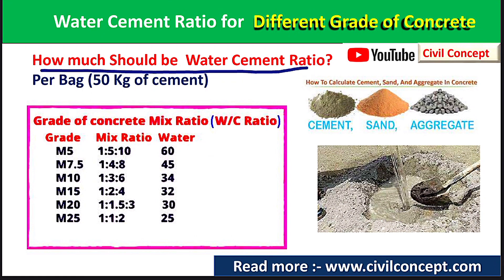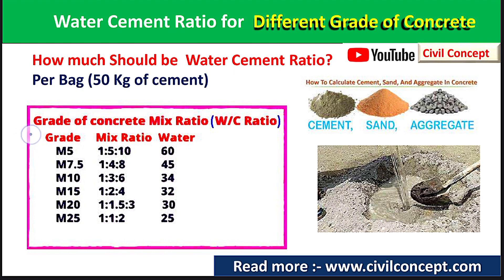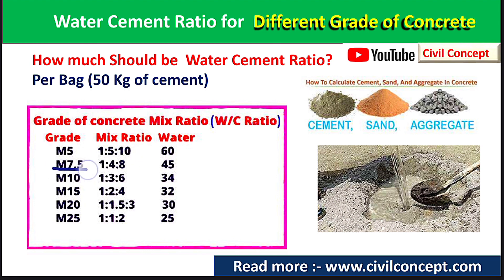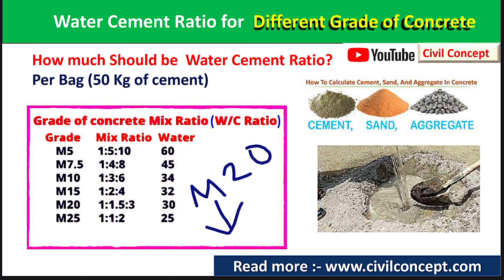Now let us see how much water should be used per bag — that is, per 50 kg of cement — for different grades of concrete. The water-cement ratio depends on the grade of concrete, because different grades have different mix ratios. For example, M5 grade has a mix ratio of 1:5:10, and M7.5 grade has a mix ratio of 1:4:8.